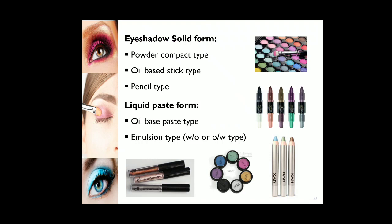Eye shadows are available in different forms: powder compact, oil-based stick types, and pencil types. Most eye shadows are also available in liquid form. These are oil-based paste types or emulsion types — W/O or O/W type of emulsions.